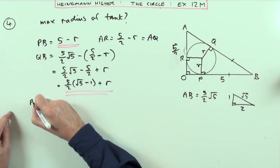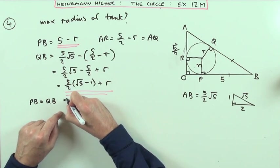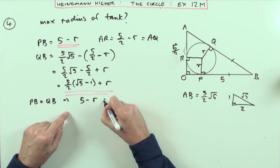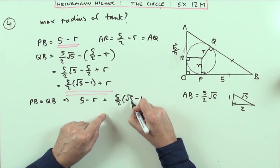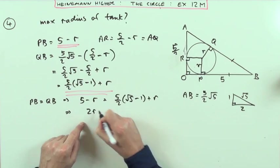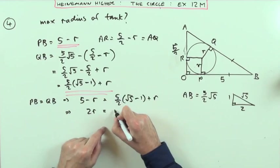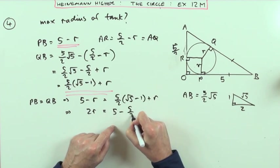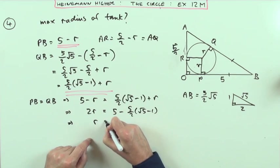In which case they must be the same. From p to b must be the same as from q to b. That means that 5 minus r is the same as (5/2)(√5 - 1) plus r. Bring the r's to one side, so that gives me a 2r. Bring that over to that side and it'll be 5 take away (5/2)(√5 - 1).